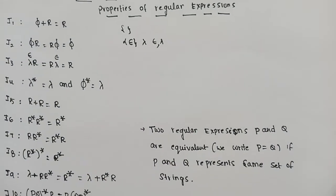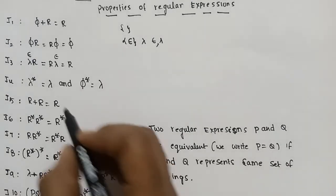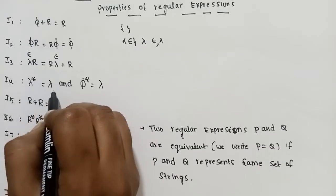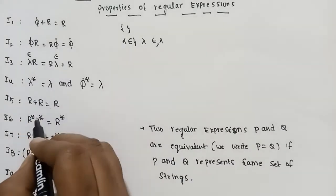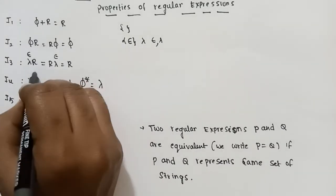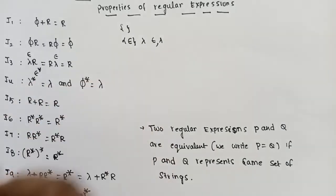Next, Kleene closure on the empty set regular expression. That means λ* is equal to λ. This is the third property.